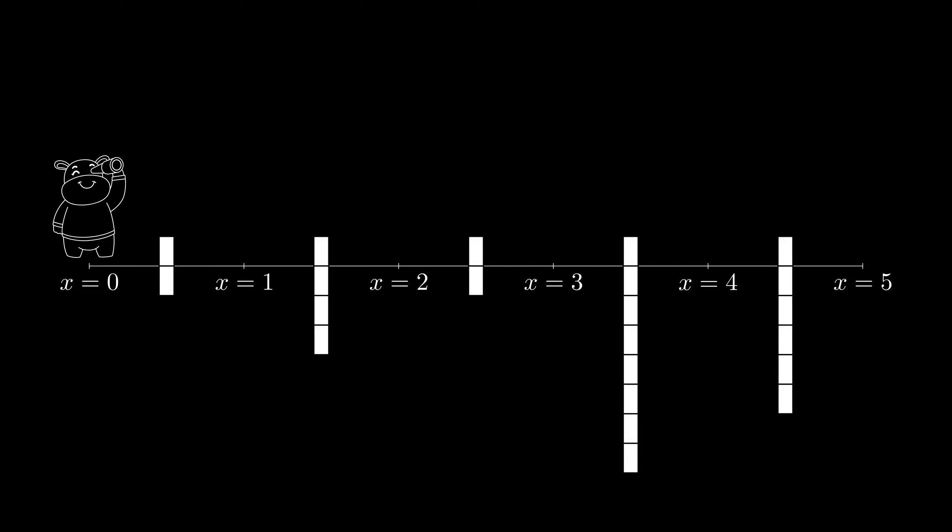The solution minimizing the direction changes would be the one that covers the most amount of bars per direction change. When the neighboring bars are at the same height, Bessie can make longer back and forth trips that minimizes the direction changes.